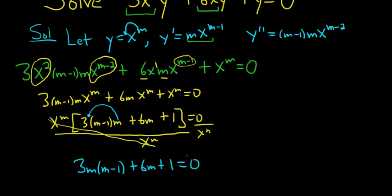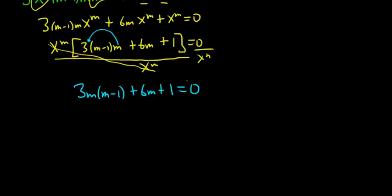Now we have to solve this equation for m. So I think a good step here would be to distribute this 3m. So 3m times m is 3m squared. Then 3m times negative 1 is negative 3m. Then we have plus 6m and plus 1. And that's all equal to 0.